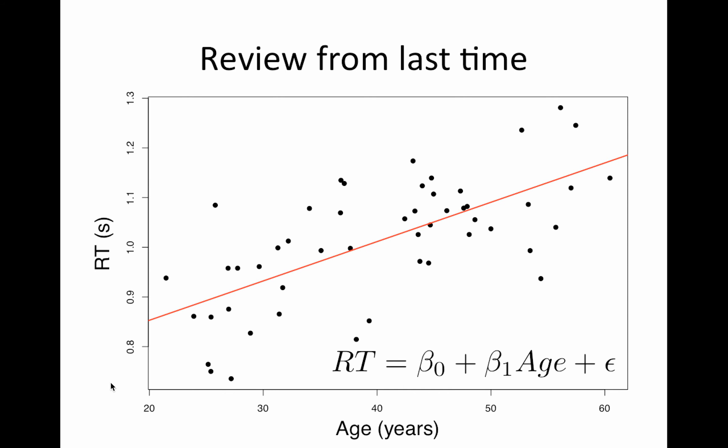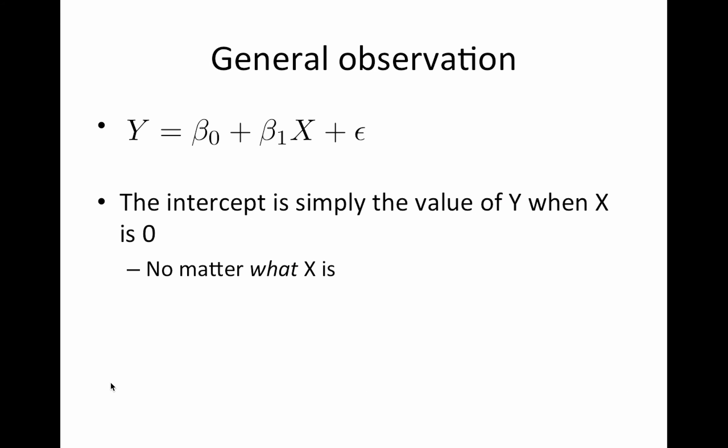So review from last time: we ran this regression model where we were modeling reaction time as a function of age. So we have reaction time equals beta naught plus beta 1 times age, and remember beta naught was the intercept and beta 1 was the slope. So one general observation for just any regression of the form y equals beta naught plus beta 1 x is that the intercept beta naught is simply the value of y when x is 0, no matter what x is.